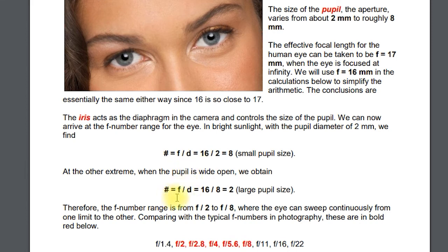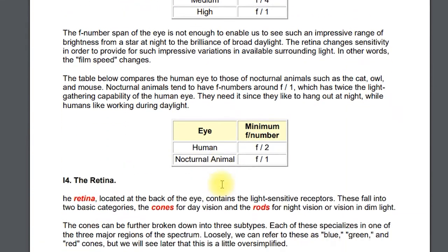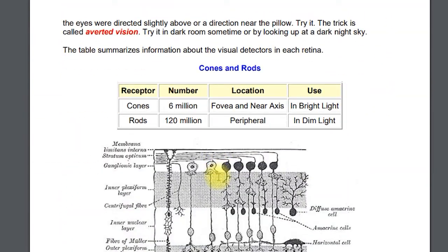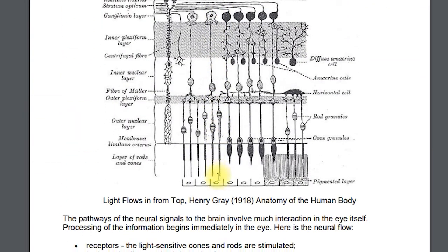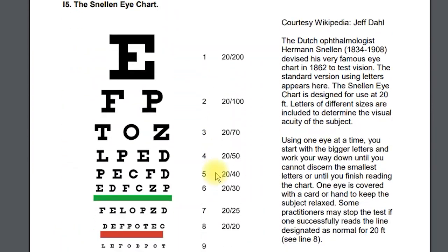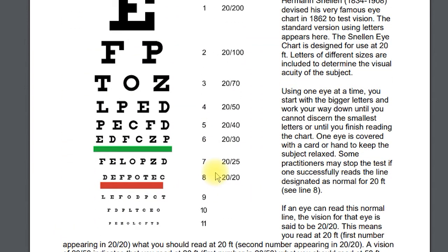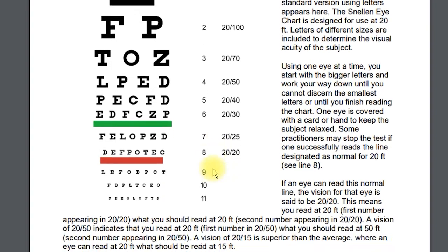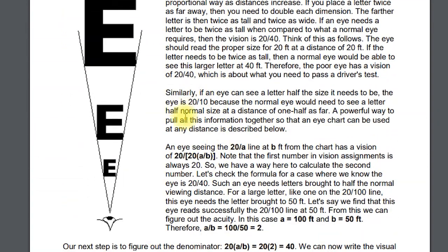Your f-number definition appears again — remember it as D equals F-slash-number. We can skip the biology background, but for the eye chart, it's nice to know that if you can read the 20-A line at B feet, you know how to figure out your vision. Go ahead and review that.